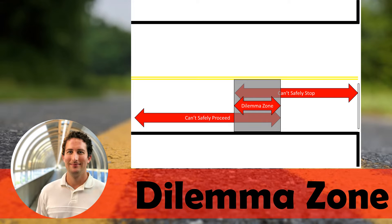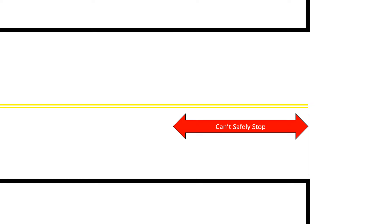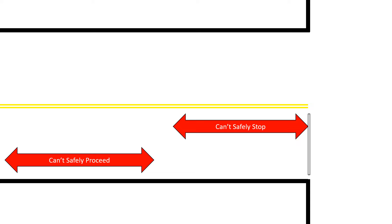Dilemma zones are something we want to avoid creating if we were designing a traffic signal and the signal timing. Starting with our intersection — a signalized intersection — we're only looking at one approach. As drivers, we know there's some area when the indication turns yellow where you can't safely stop. If you're almost at the stop bar and the signal turns yellow, you can't stop and you're going to proceed through. We also know there's some distance further away where you can't safely proceed once you see that yellow. So we have two regimes: an area where you can't safely stop and those people proceed through on yellow, and an area where you can't safely proceed and those people should stop.